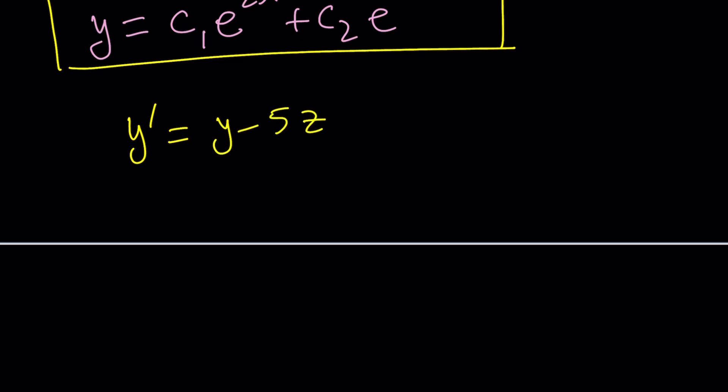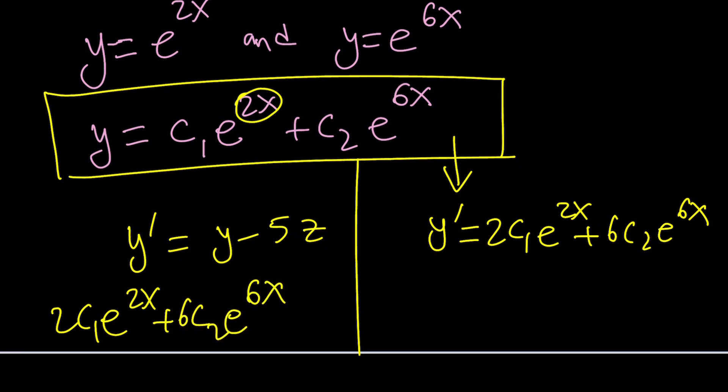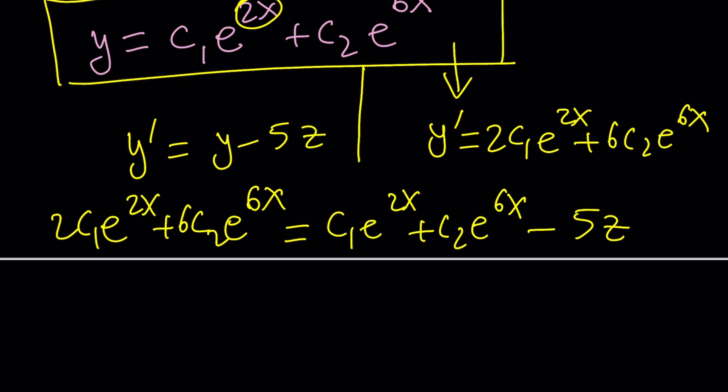And now let's go ahead and find y prime from here. Y prime would be 2 from the derivative of 2x, 2c1 e to the 2x. And this would be 6c2 e to the 6x. That's y prime. And now we're going to go ahead and just set it equal to y minus 5z. And the y is c1 e to the 2x plus c2 e to the 6x minus 5z. My goal is to solve for z.